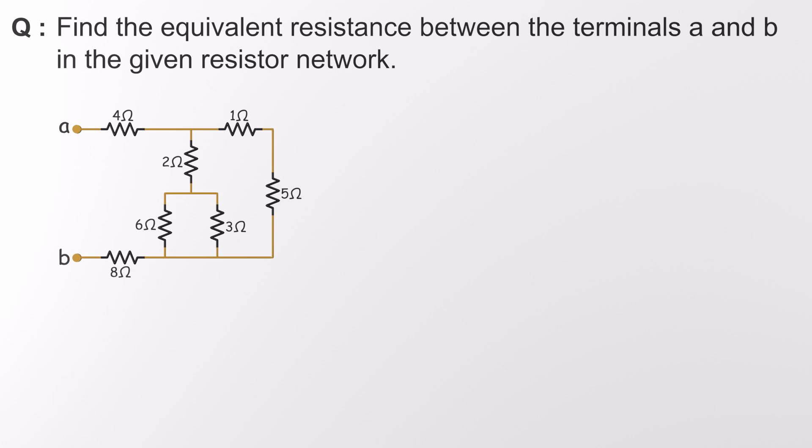Find the equivalent resistance between the terminals A and B in the given resistor network. To solve this problem, we need to simplify the resistor network by combining resistors that are connected in series or parallel, step-by-step, until we're left with a single equivalent resistance.